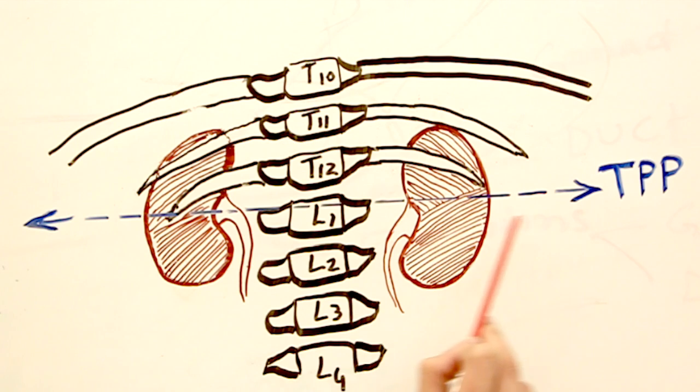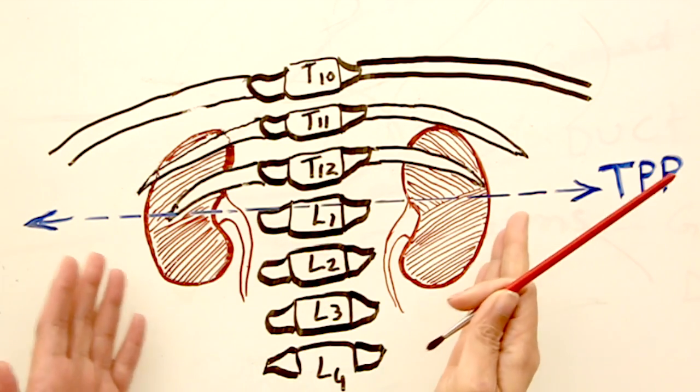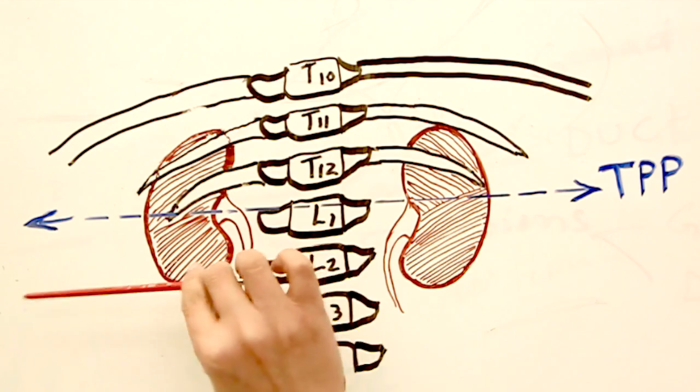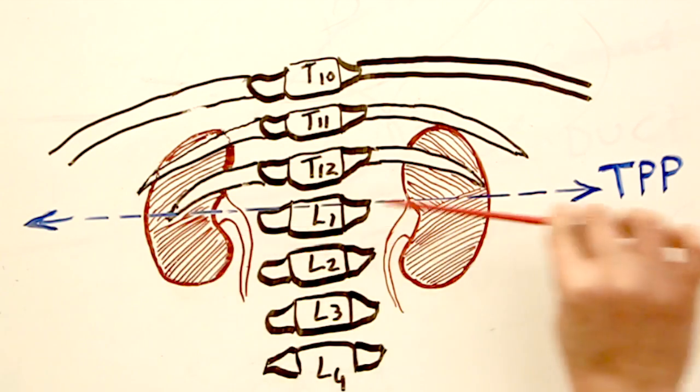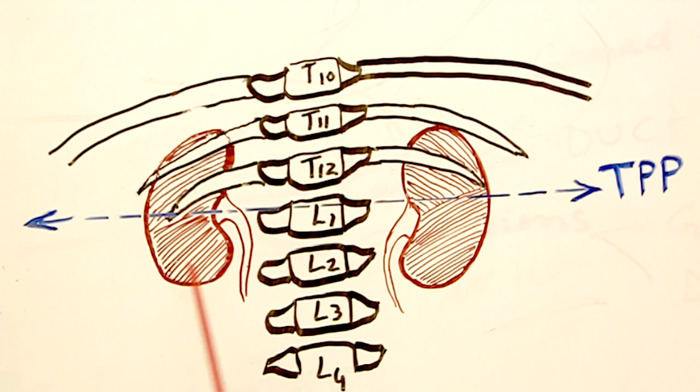There is a blue colored line bisecting the vertebral column. This is known as the transpyloric plane. It's called trans because it's transversely running. Pyloric means that it's bisecting the pyloric end of the stomach horizontally. So it's an imaginary plane, mostly used by surgeons as an important landmark.